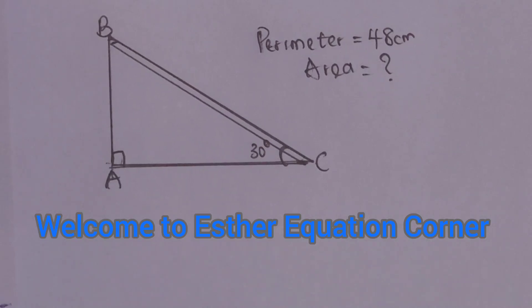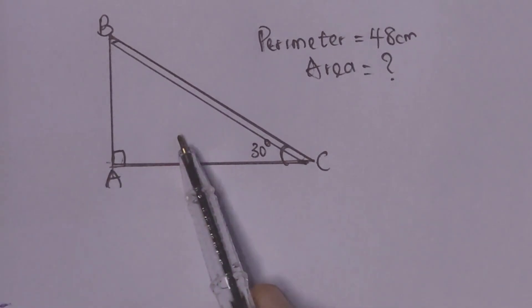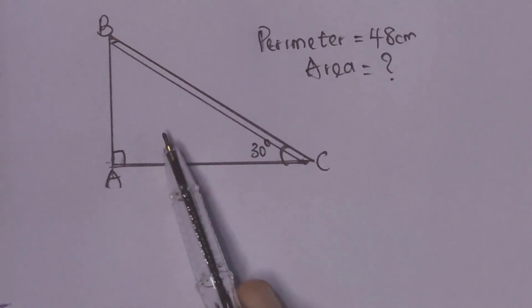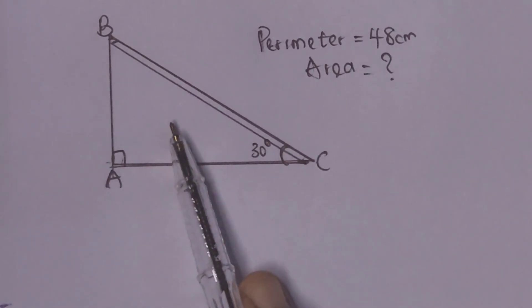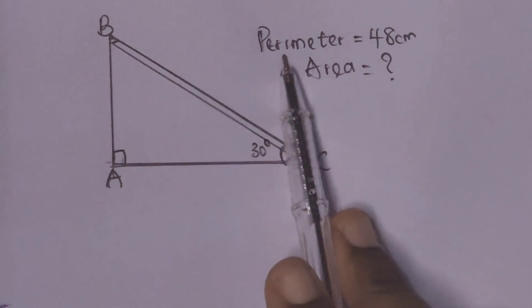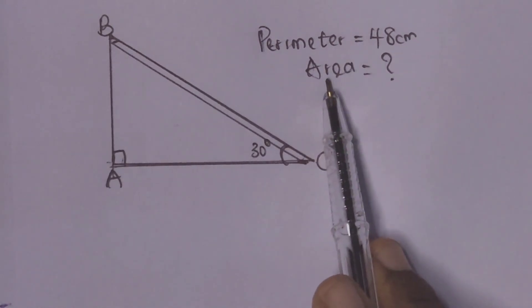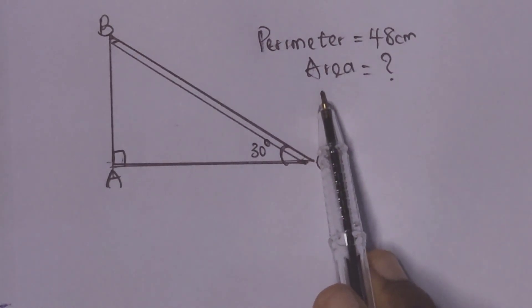Welcome to Esther Equation Corner. Today we have a right-angle triangle, and we are given the perimeter and we want to determine the area.